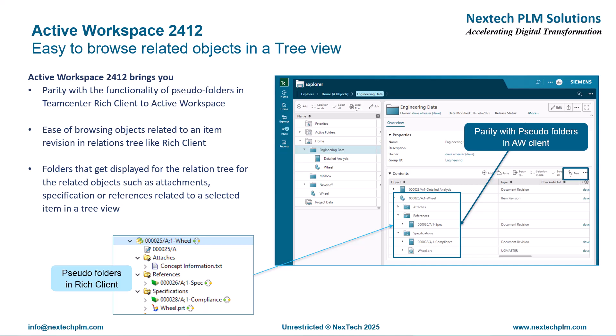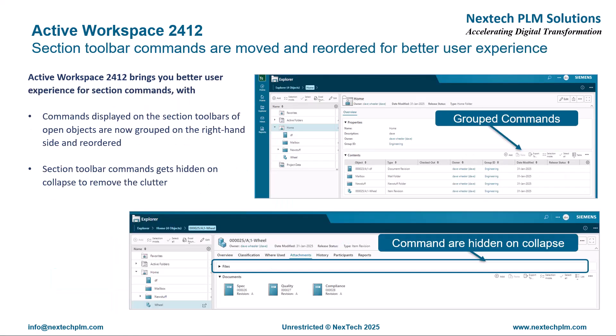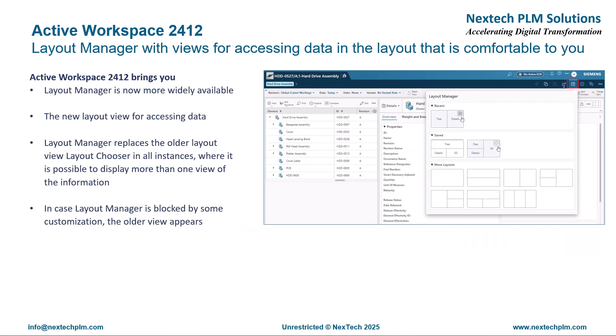Active Workspace 2412 brings us several interesting improvements. This release enables you to easily browse the related object in TreeView, like what you had in RichClient, along with SudoFolder. Now you have a new TreeView option to traverse related data, where data is displayed under the SudoFolders for the related object. This made traversing and understanding data much easier. Similarly, Section Toolbar commands are moved and reordered for better user experience.